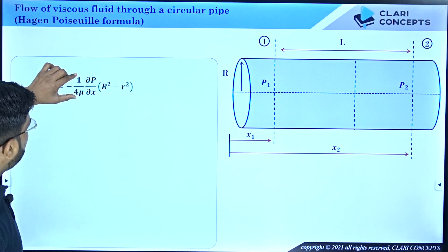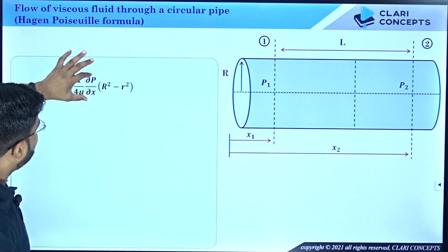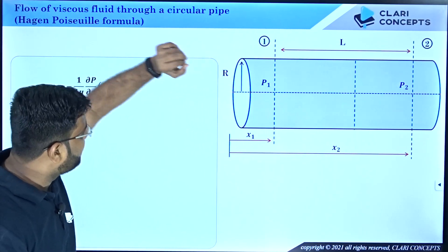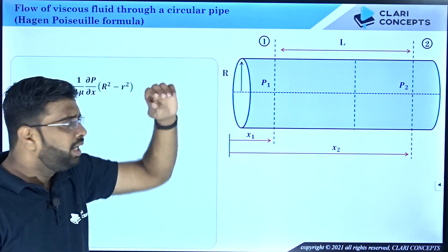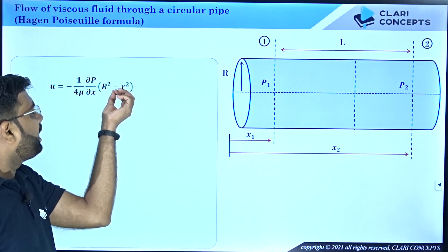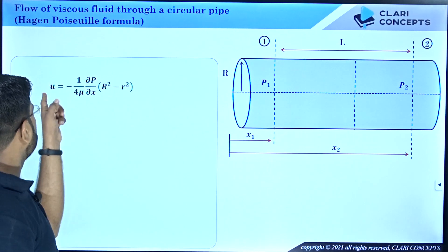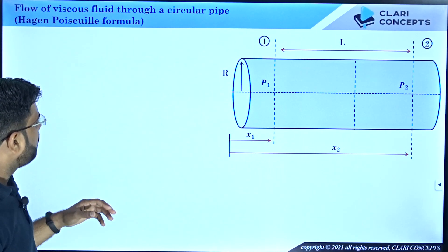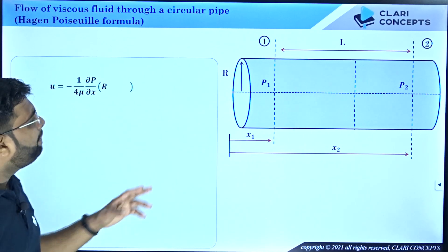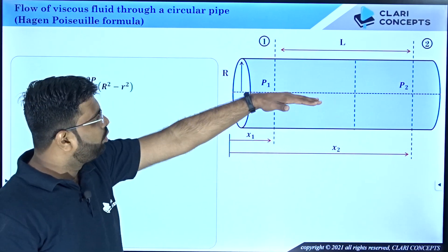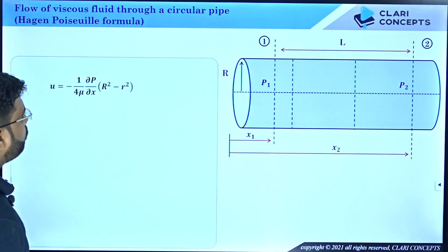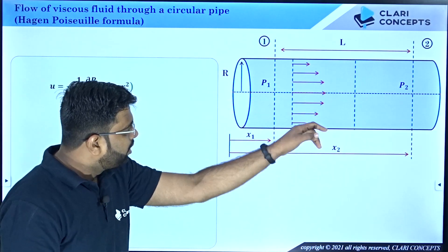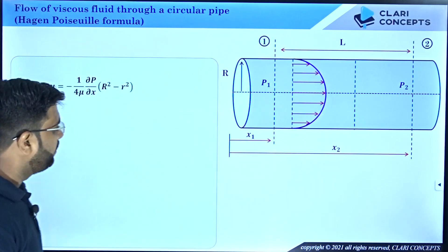Here, μ is the viscosity of the fluid, capital R is the pipe radius, and small r is the radial position. If you substitute different values of r, you get different velocities. When r equals 0 (center), you get the highest velocity. When r equals capital R (boundary), you get the lowest velocity. So the velocity profile is parabolic: maximum at the center, minimum at the wall.